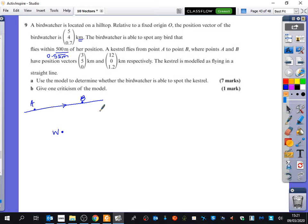And the kestrel is modelled as flying in a straight line. Use the model to determine whether the bird watcher is able to spot the kestrel. So what's it actually asking for us to find out here? Great. So what we want to do is the shortest distance.